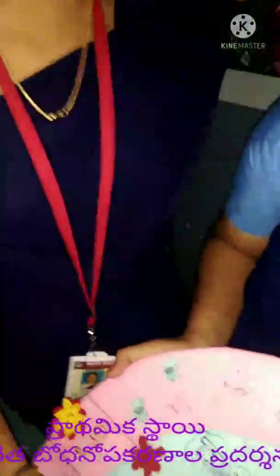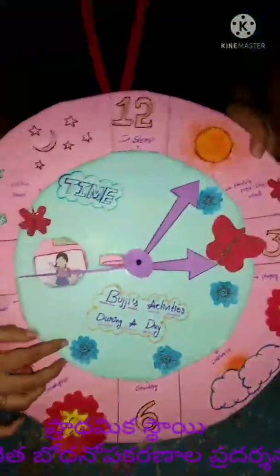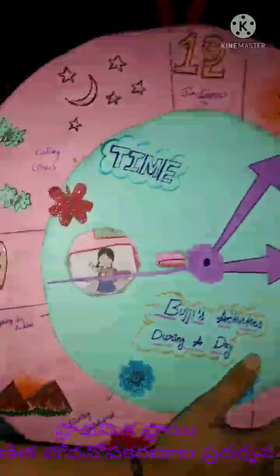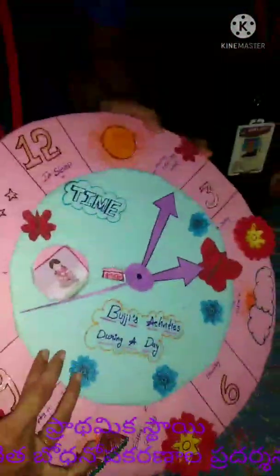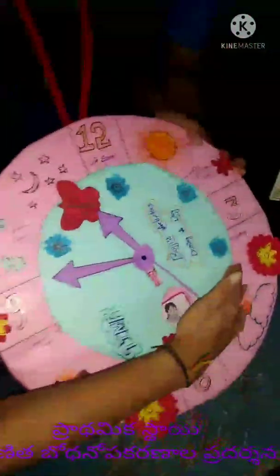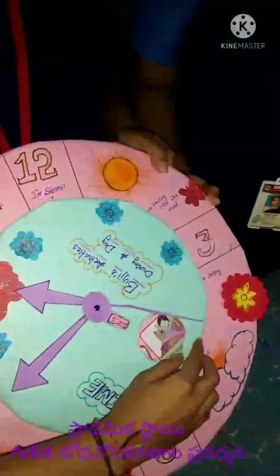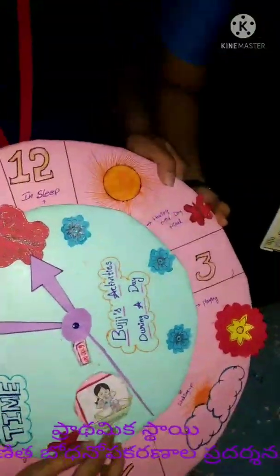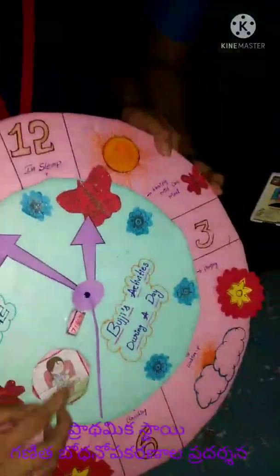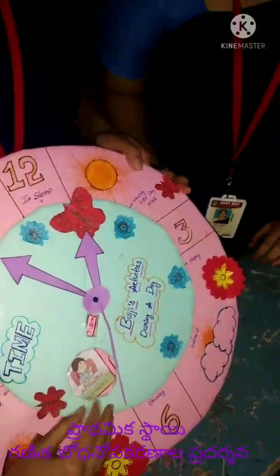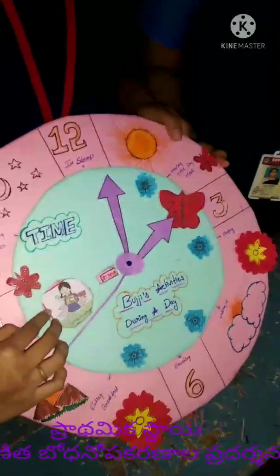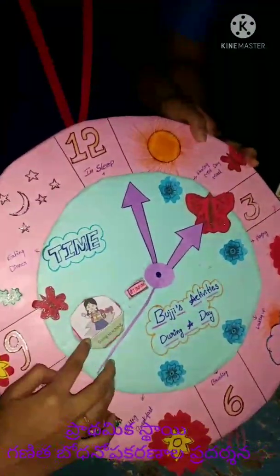Today we made this TLM for Costular 7th lesson. By introducing this TLM, we will introduce the features of the lesson. We are showing the activities done by a girl in a day. At morning at 5:30 she wakes up. At 6am she brushes her teeth. And at 7:30 she goes to school. And at 8:30 she goes to school.